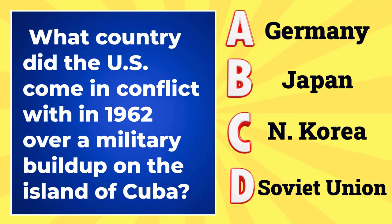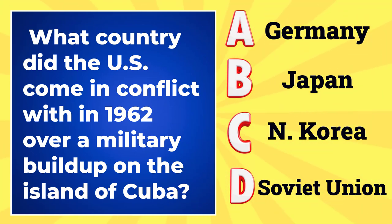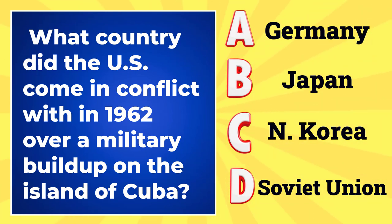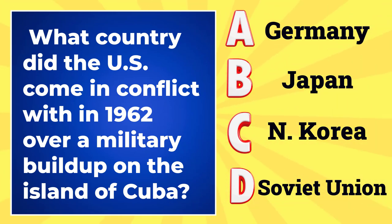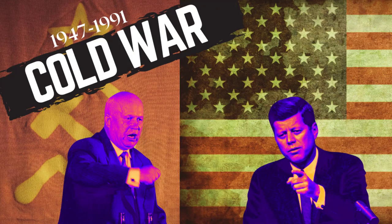Question number one. What country did the United States come in conflict with in 1962 over a military buildup on the island of Cuba? Was it A. Germany, B. Japan, C. North Korea, or D. the Soviet Union? The answer is the Soviet Union. This is during the Cold War, about 20 years into the Cold War — that heightened tension and period after World War II between the United States and the Soviet Union.